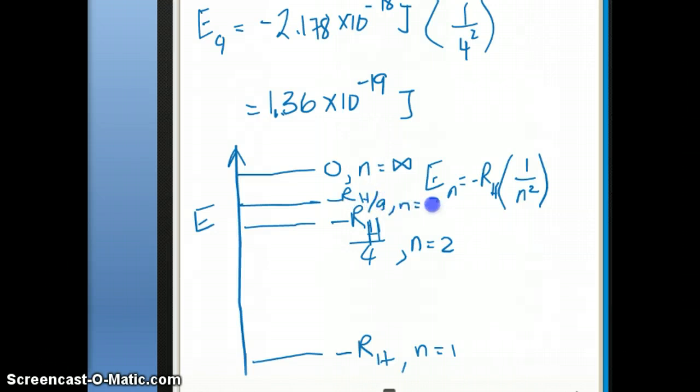As you go higher, then you get negative RH over 16, which is 4 squared. That's even closer. And then you go negative RH over 25, which is closer yet. You can see that as you go higher and higher in energy level, the actual values of the energy from one level to the next get closer and closer.